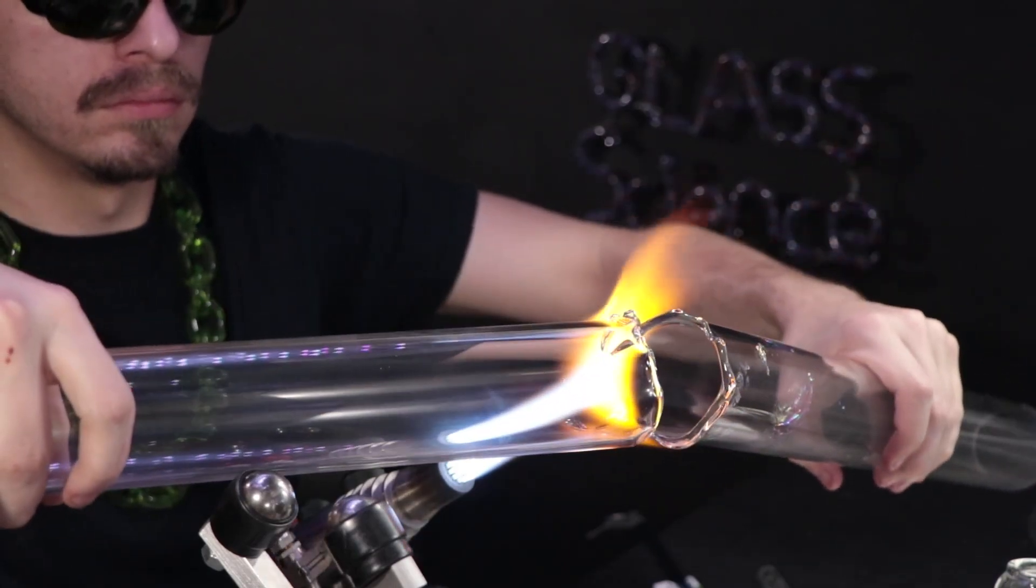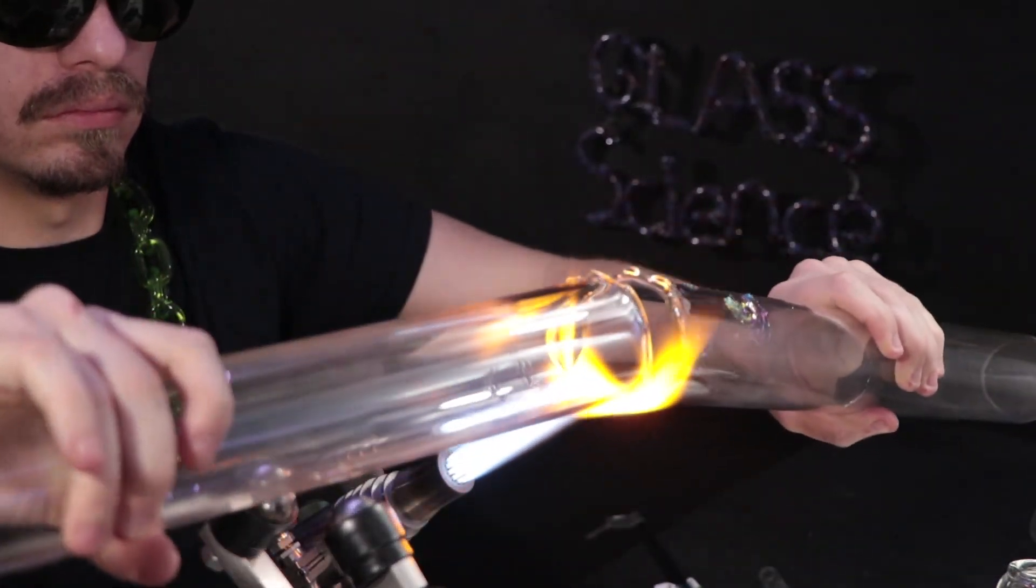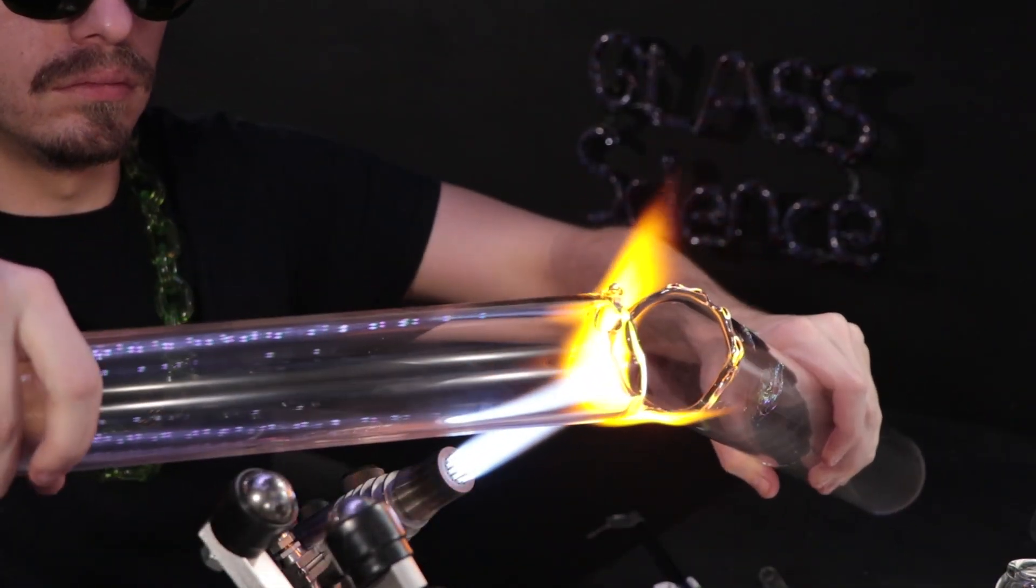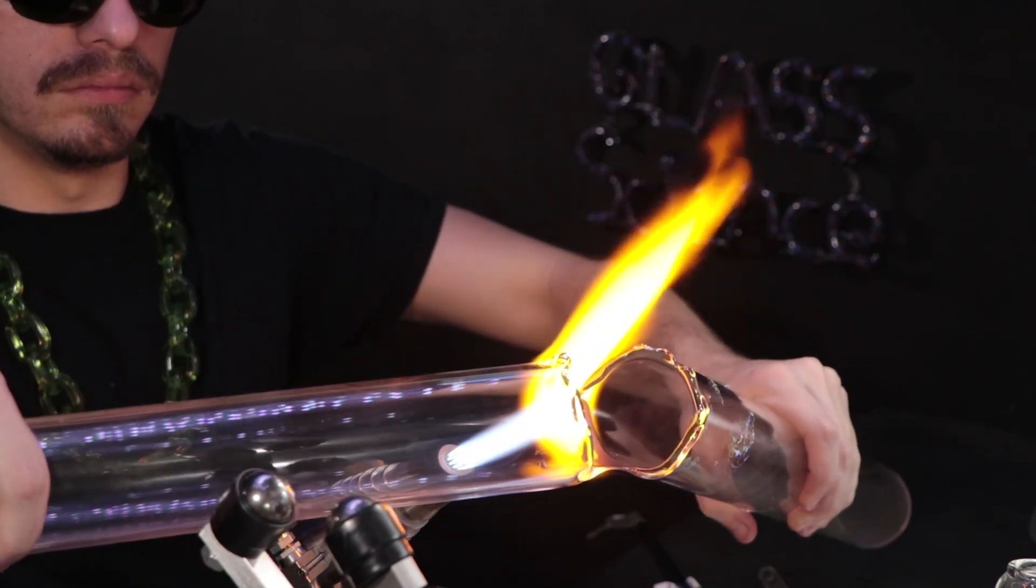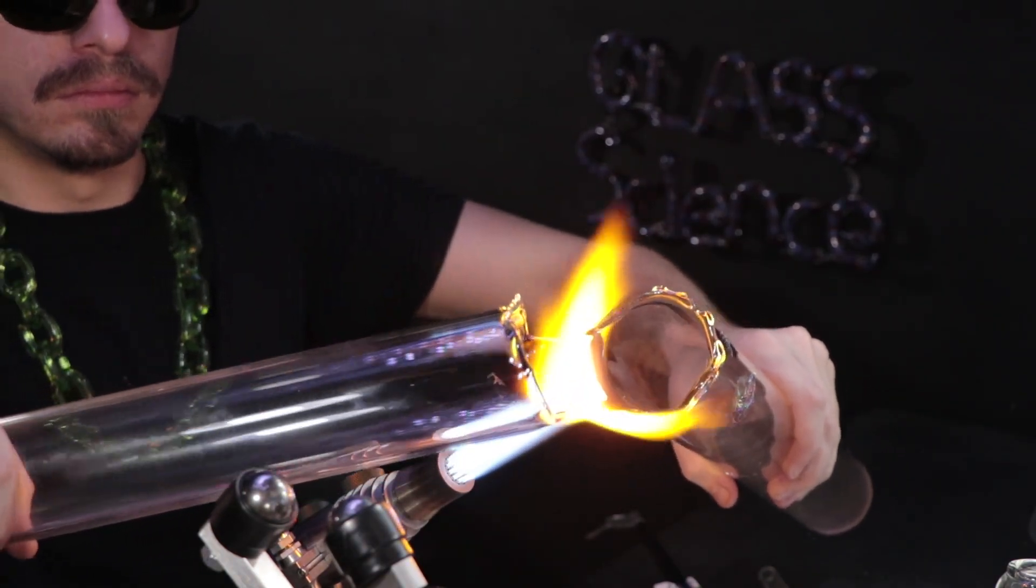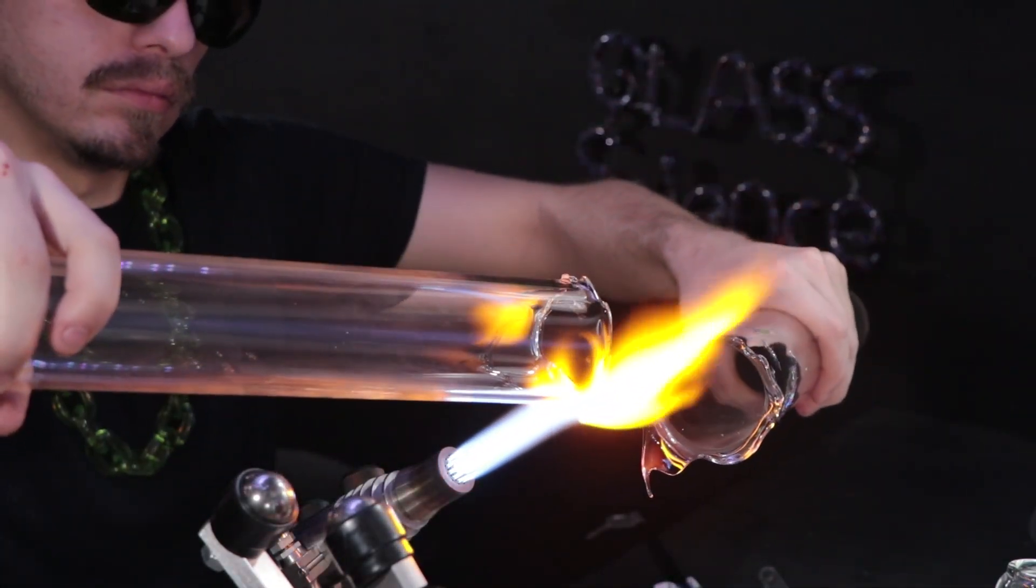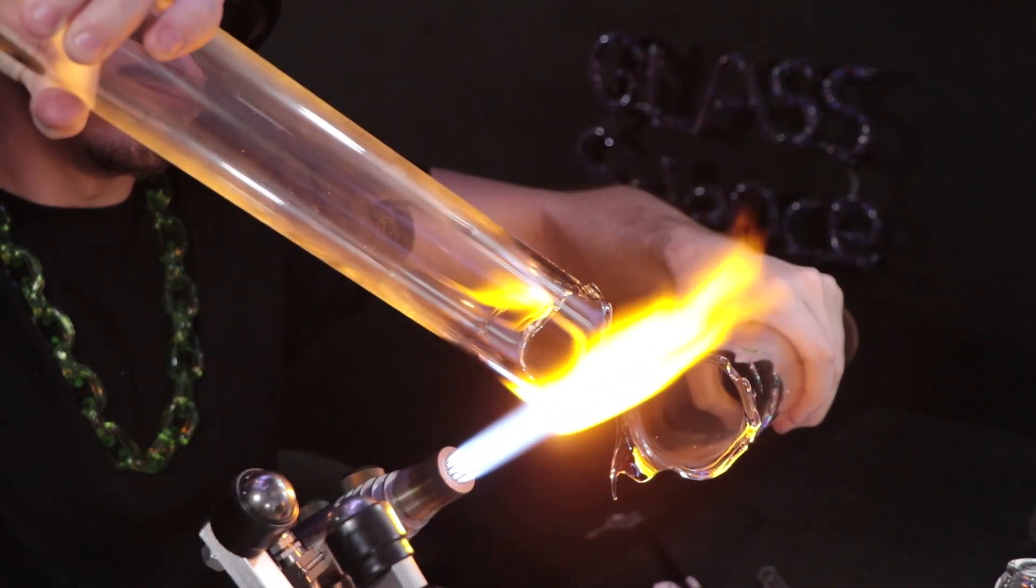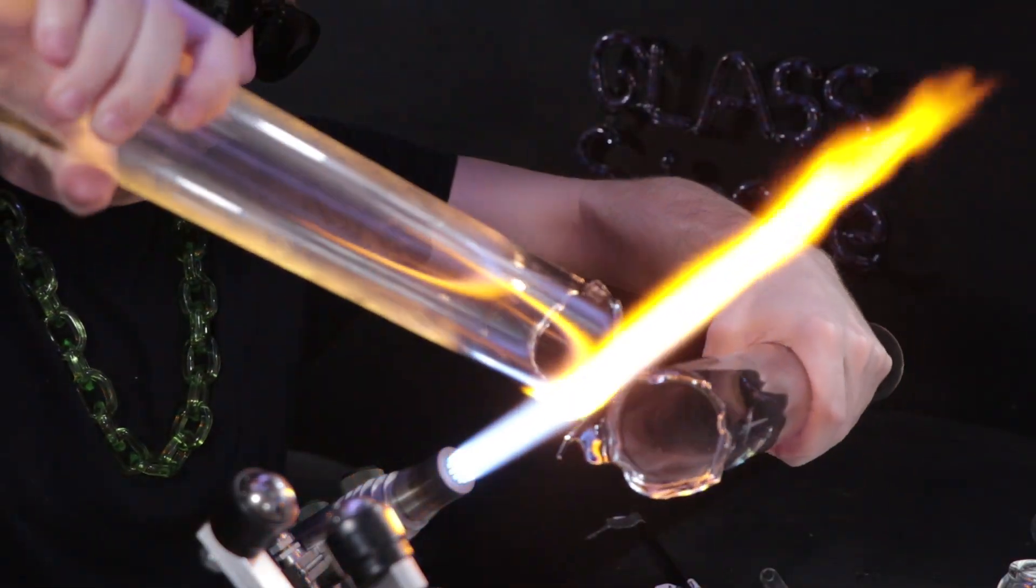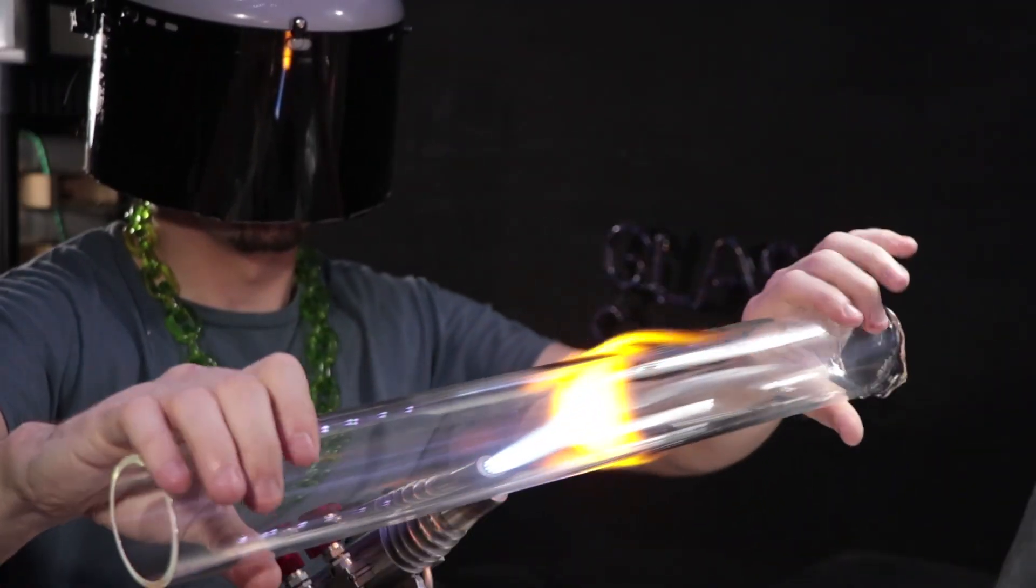Now this device or this thermometer wasn't actually invented by Galileo, but it's based off the concepts of buoyancy which he was one of the first to observe and document. And this first section will be the tube that's going to hold the water and the bulbs.